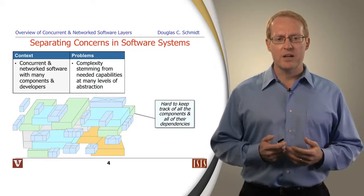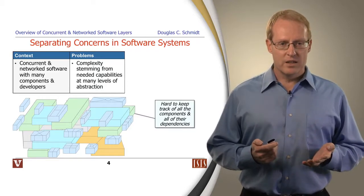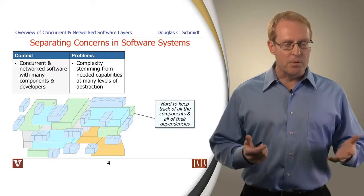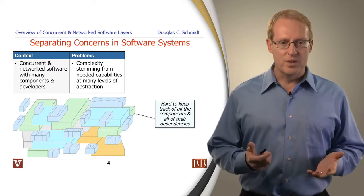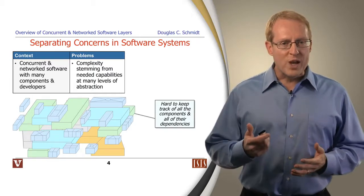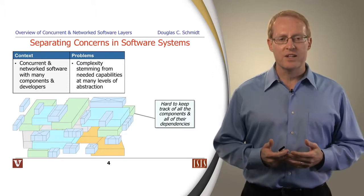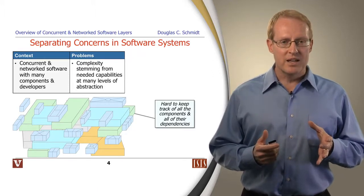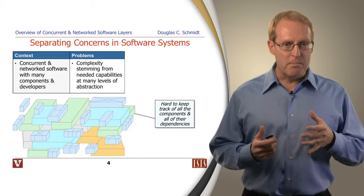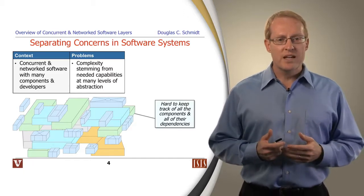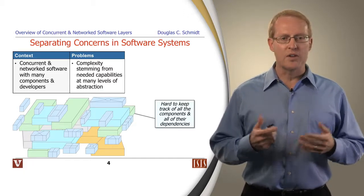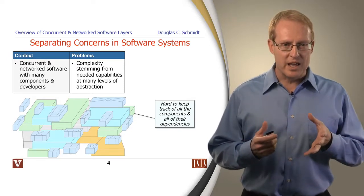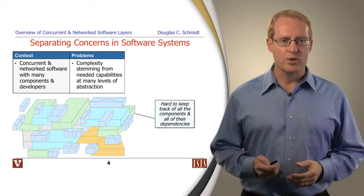Here's the context. Imagine that you're developing concurrent and network software and you've got lots of components and lots of developers. One thing you have to be very careful of in such a context is the complexity that stems from the needed capabilities that are provided at many different levels of abstraction. It's often hard to keep track of all the components and all the dependencies if everything exists in one monolithic structure.